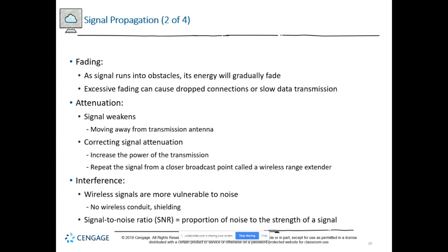Three key issues: fading is the signal being disrupted by obstacles — trees, walls, whatever. Attenuation is the signal becoming weak due to distance. Interference is your typical noise. These are different issues that can occur with wireless signals.